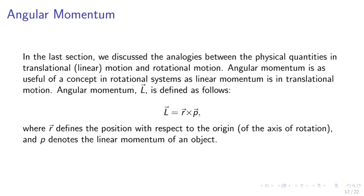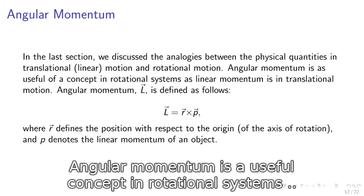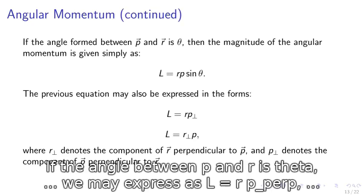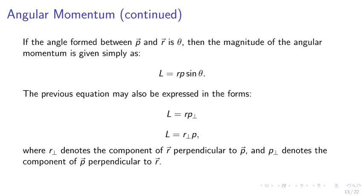Angular momentum. Angular momentum is a useful concept in a rotational system. It is defined as L equals R cross P, where R defines the position and P denotes the linear momentum of an object. If the angle formed between P and R is theta, the magnitude of the angular momentum is L equals RP sine theta. We may also express this as L equals R times P-perpendicular, or L equals R-perpendicular times P, where R-perp denotes the component of R perpendicular to P, and P-perp denotes the component of P perpendicular to R.